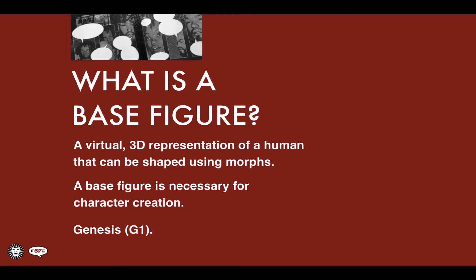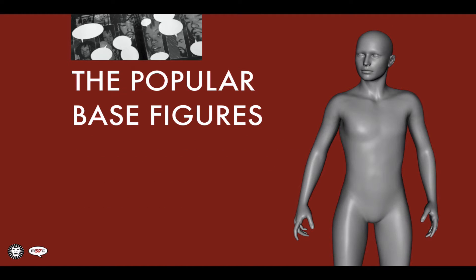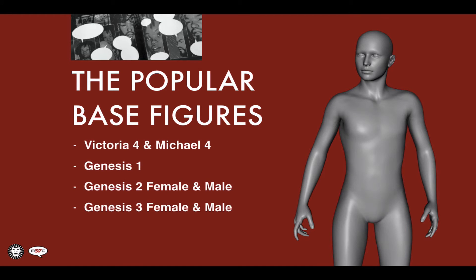The base figure that I happen to use is named Genesis — G1 for short, because it's the first generation of Genesis. It looks like this picture right here. You can see it's very generic, there's not much to it, and that's kind of the point. The idea is you take this and you turn it into something that suits whatever you need. There are a number of popular base figures out there — it's not just Genesis, but Genesis is the one I've chosen.